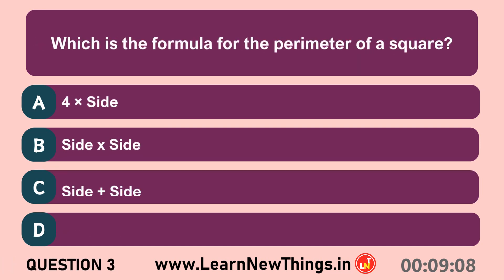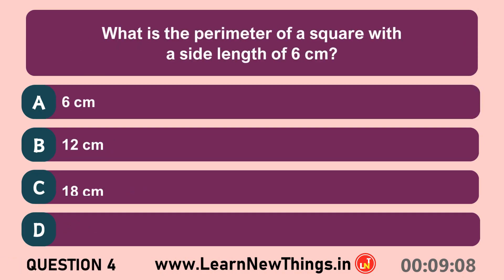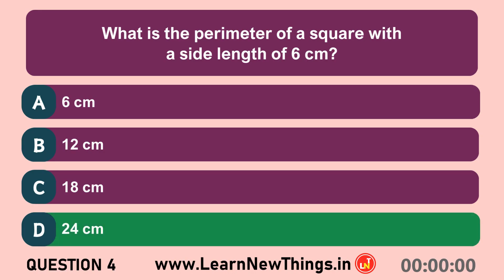Which is the formula for the perimeter of a square? 4 into side. What is the perimeter of a square with a side length of 6 cm? 24 cm.